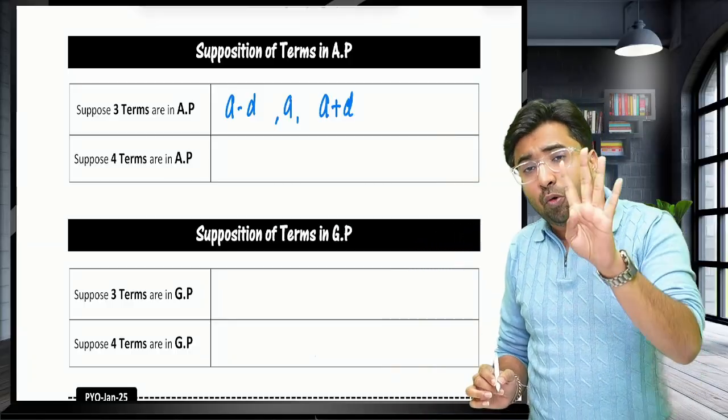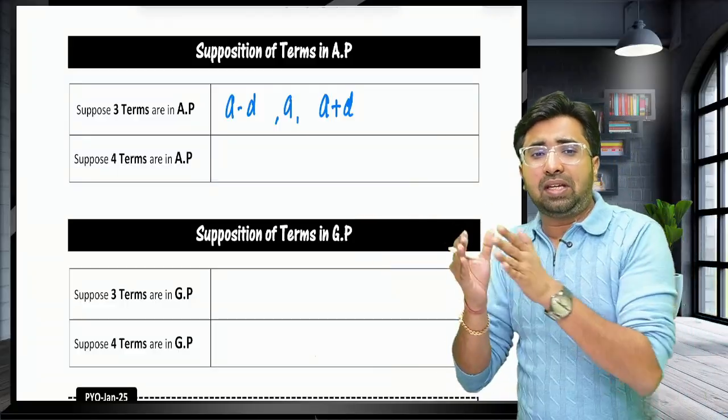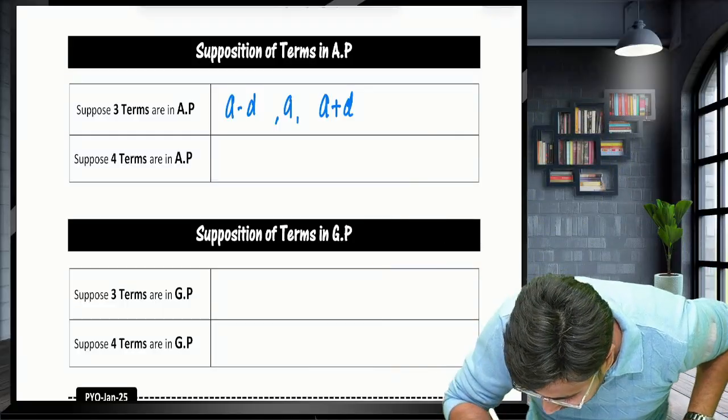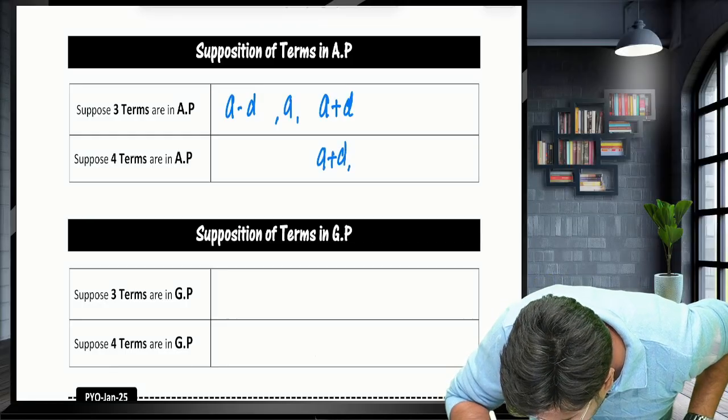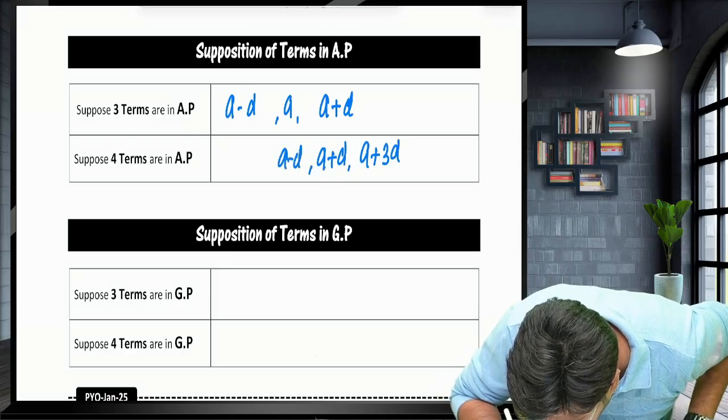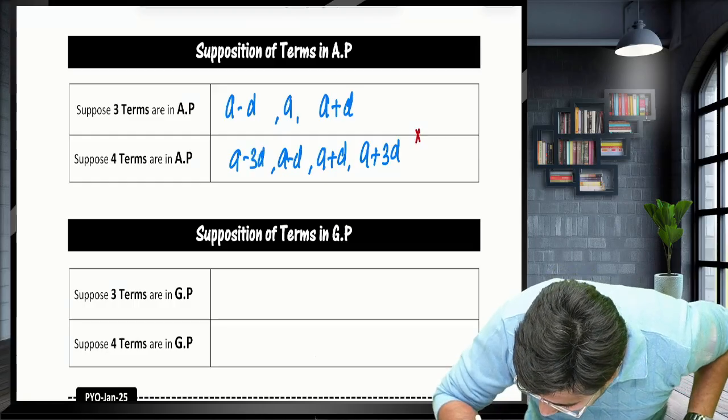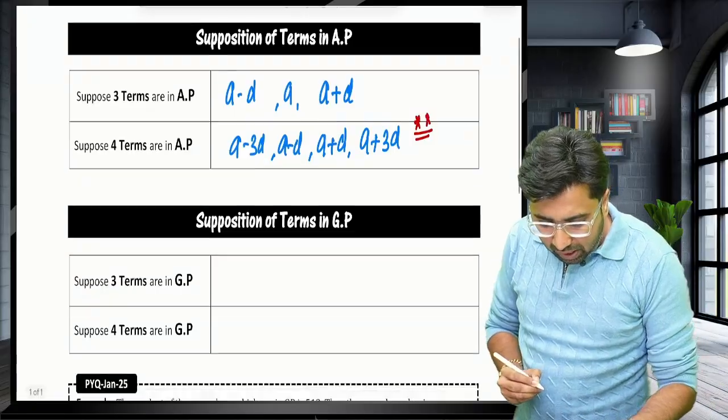But in case of if you have to assume 4 terms in AP, what we should assume? Don't assume A, A plus D, A minus D. Assume A minus 3D, A minus D, A plus D, A plus 3D. Very important for upcoming exam. Make sure you have this in your mind.